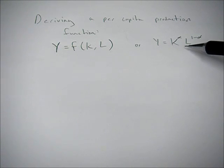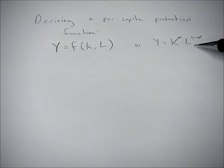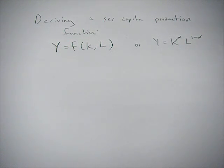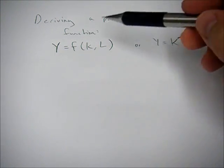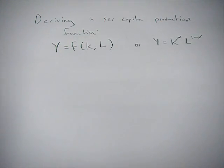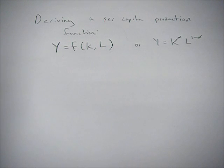If we give it a functional form, we could raise k capital to the alpha and l labor to the 1 minus alpha. Now, to get it into per capita terms is actually very simple — you just divide both sides of this equation by l, which is labor, and that gives it to you in per capita terms. But what's difficult might be understanding why we get the result we do, and the algebra behind it.